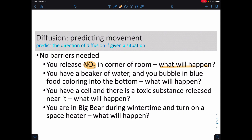You have a beaker of water and you bubble in blue food coloring into the bottom. What will happen? The entire beaker is going to turn blue. It's going to spread out from being super dark blue, where that bubble was, to the entire beaker having the same shade of blue. You have a cell and there's a toxic substance that's being released near it. What will happen? The toxic substance is going to spread from its source and it's eventually going to diffuse into that cell if it can make it through the cell membrane.